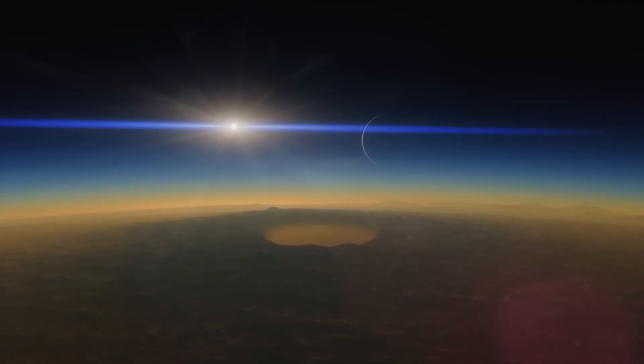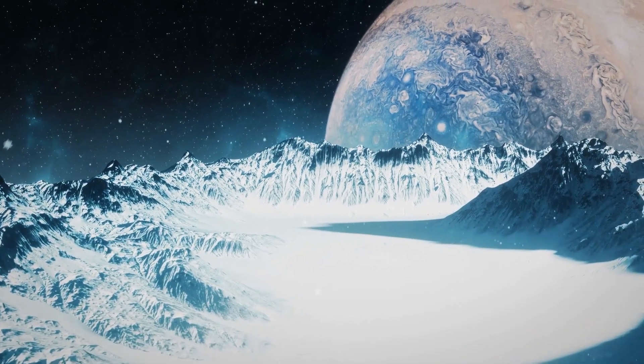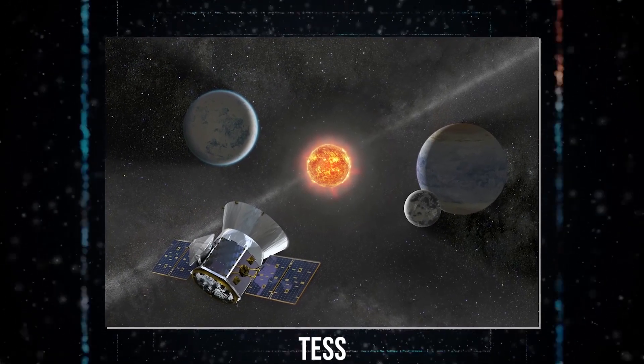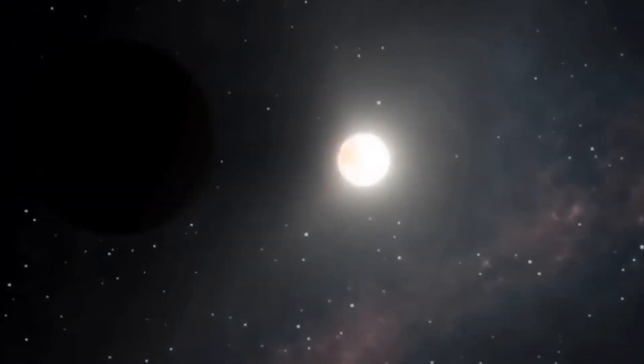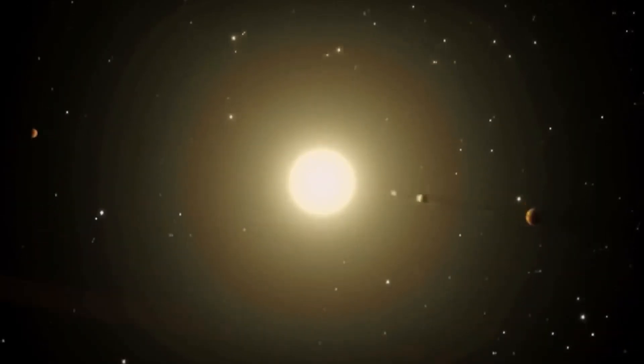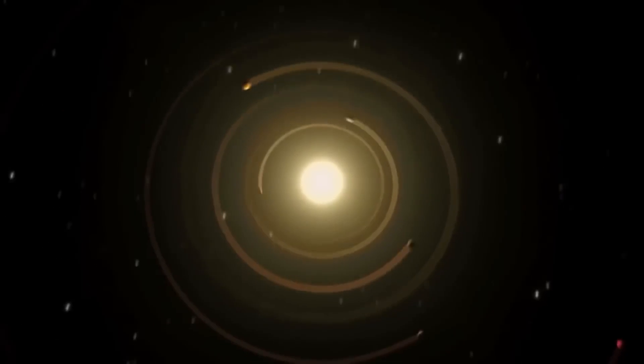One thing we do know is that TOI-5205b is just the tip of the iceberg. NASA's Transitioning Exoplanet Survey Satellite, or TESS, launched in 2018, has found thousands of potential planets by surveying the light of the nearest and brightest stars to spot dips in starlight, which suggests those stars have planets orbiting them.